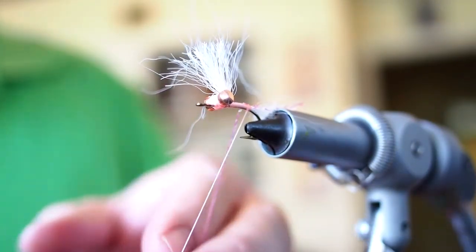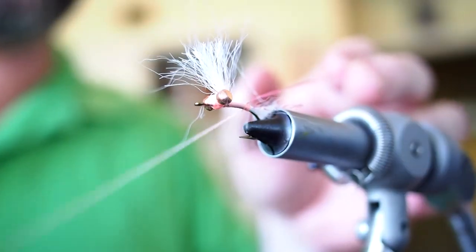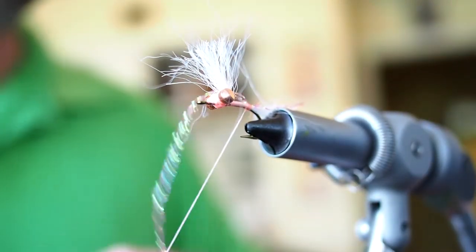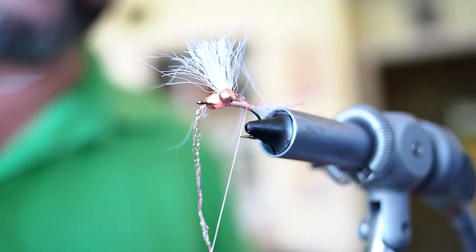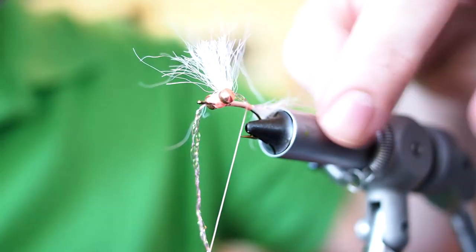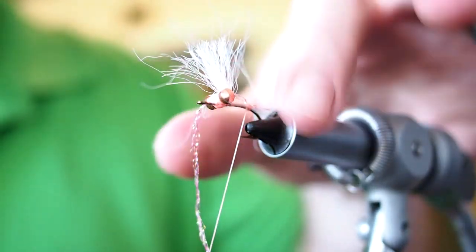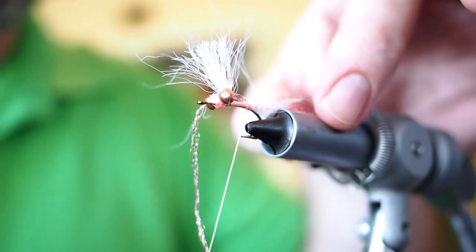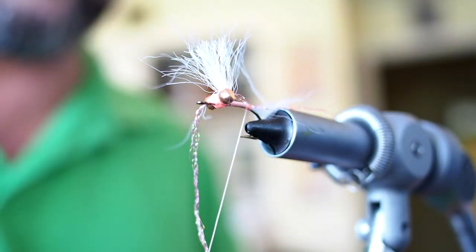Attach that a couple times in the back, couple in front of that tag end. Then you can take your scissors and just cut the crystal flash, and now you've got two or three strands on either side of the tail. You want that to be just a little bit longer than the tail itself.